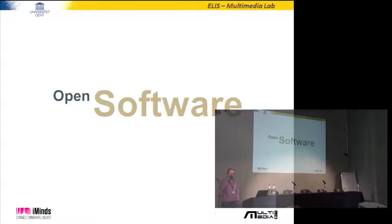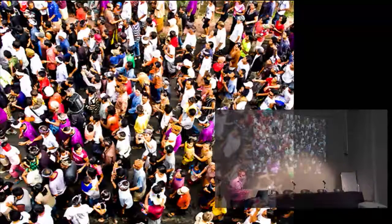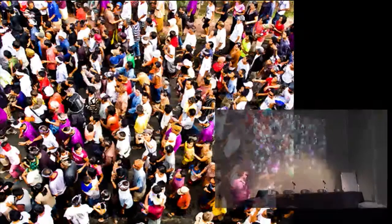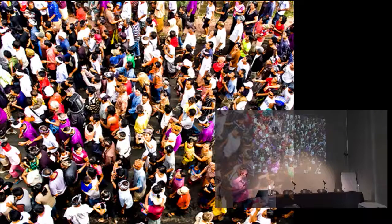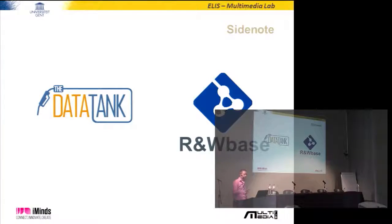The second thing I came across when thinking about open science is open software. What if all scientists could be equal and have the same tools? What if a domain expert wants to work on a tool to augment it and make it better, then give it back to the community so other researchers can use it? My team are really believers of open source. This is the technical part of my presentation — I will briefly talk about two open source projects my team is working on.